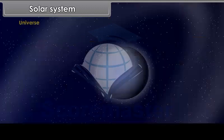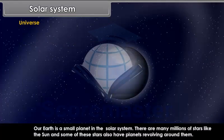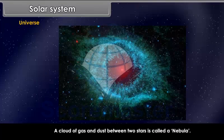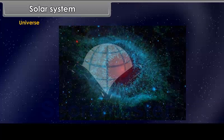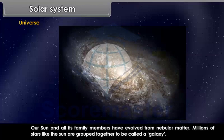Universe. Our Earth is a small planet in the solar system. There are many millions of stars like the sun and some of these stars also have planets revolving around them. A cloud of gas and dust between two stars is called a nebula.